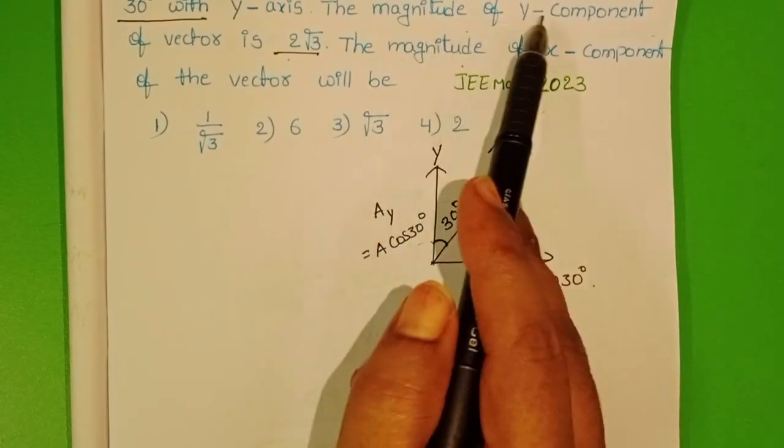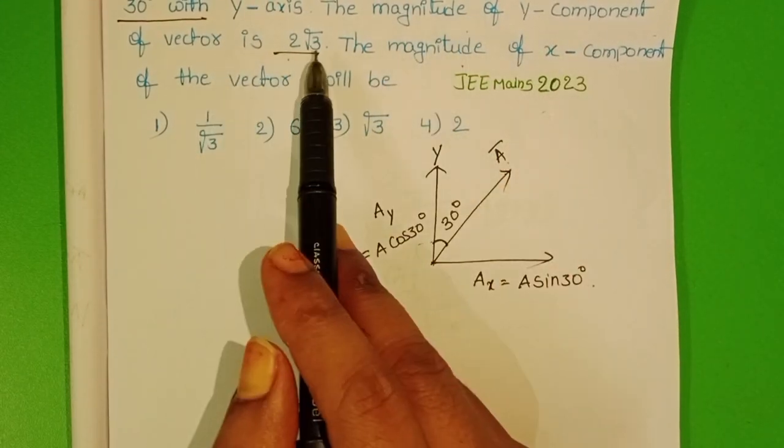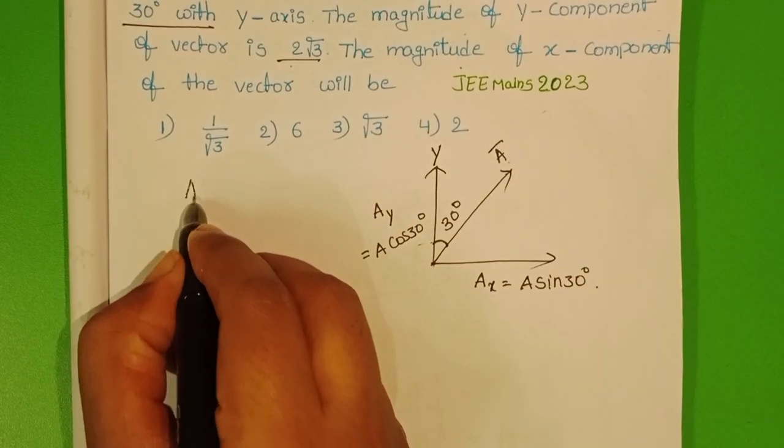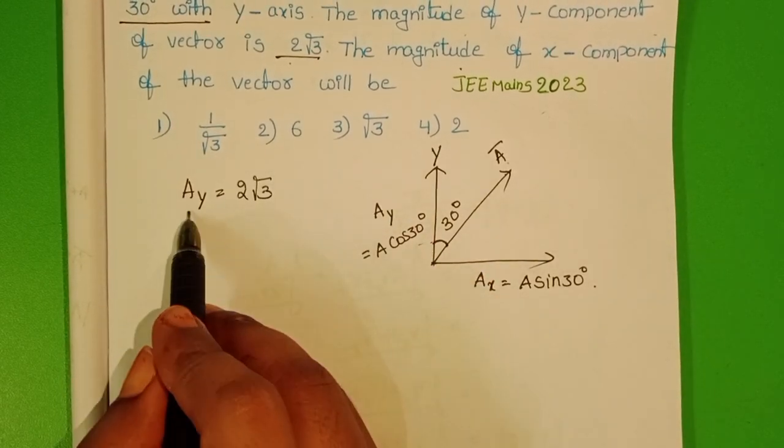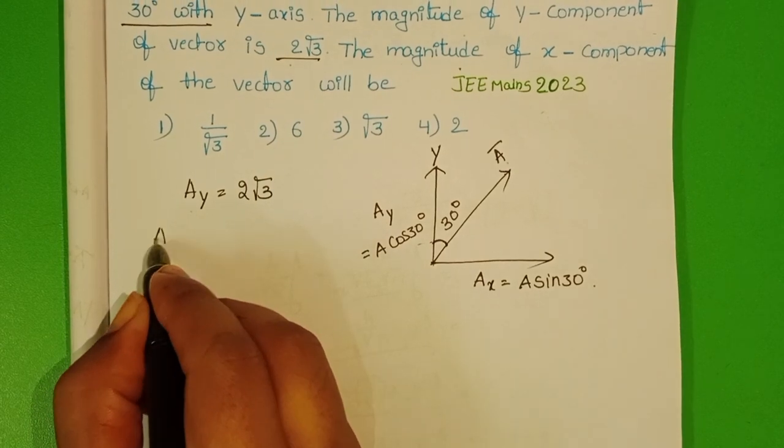Here we know the magnitude of the Y component of the vector. AY equals 2√3. In place of AY, take A cos 30.